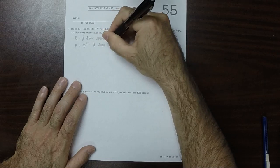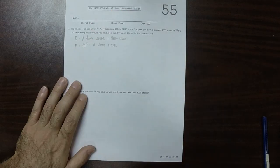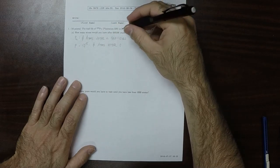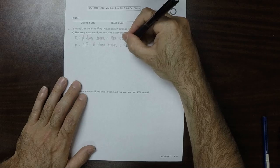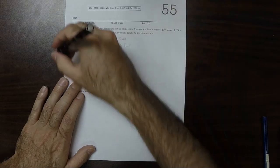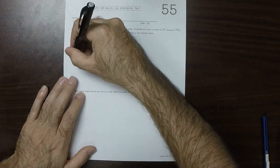So P0 equals 10^15. This is the number of atoms after zero half-lives, that is to say at the very beginning.